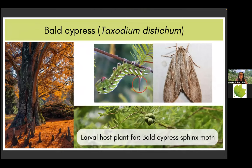Another species to mention is the bald cypress. Unfortunately, the bald cypress sphinx moth is becoming more and more rare, so planting bald cypress is really important. It is an important food source for bats and birds. The caterpillar belongs to the hornworms because it develops a little horn at the end — not dangerous for humans at all, but it's definitely a spike that might deter predators.